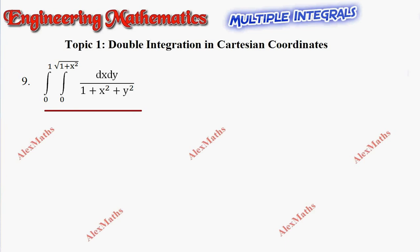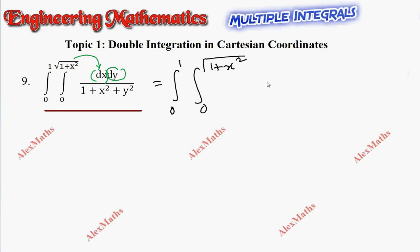First we have to check whether it is given in the proper form. If we integrate with respect to x, we substitute the limit. Since the limit is in terms of x, we get all x terms, but that cannot be integrated with respect to y at the end. So we have to write it in the correct form: integral 0 to 1, integral 0 to root of 1 plus x squared, dy dx divided by 1 plus x squared plus y squared.